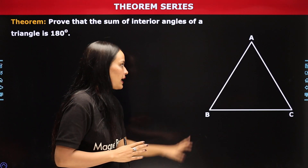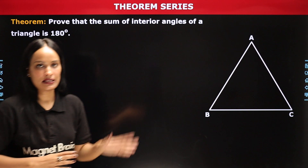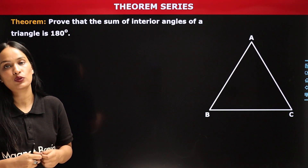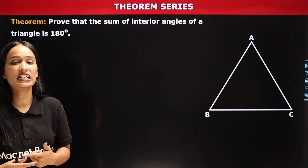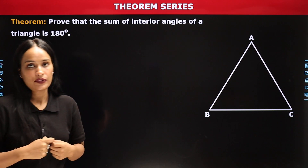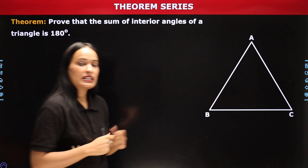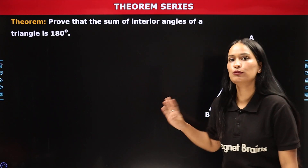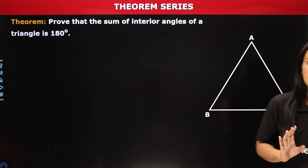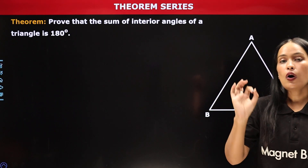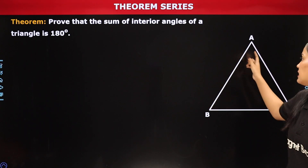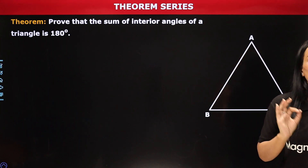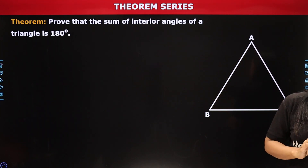आपके पास यदि कोई triangle है A, B, C, तो इसके जो interior angles हैं, उनका sum 180 degree होता है। किसी भी type का triangle बना रहे, ये theorem valid है। ये theorem कहती है कि all the interior angles का sum 180 degree होगा।